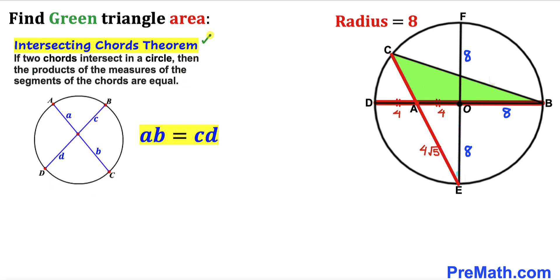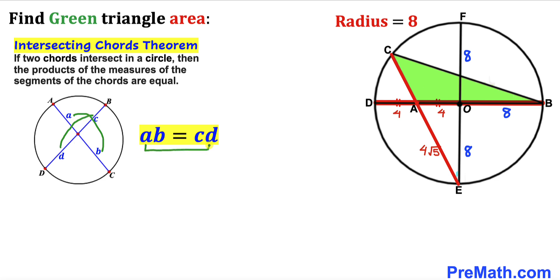Let's recall the intersecting chords theorem. According to this theorem, if two chords intersect in a circle, then the product of the measures of the segments of the chords are equal. Here we have two chords AC and BD intersecting, such that the product of segments AB equals the product of segments CD.